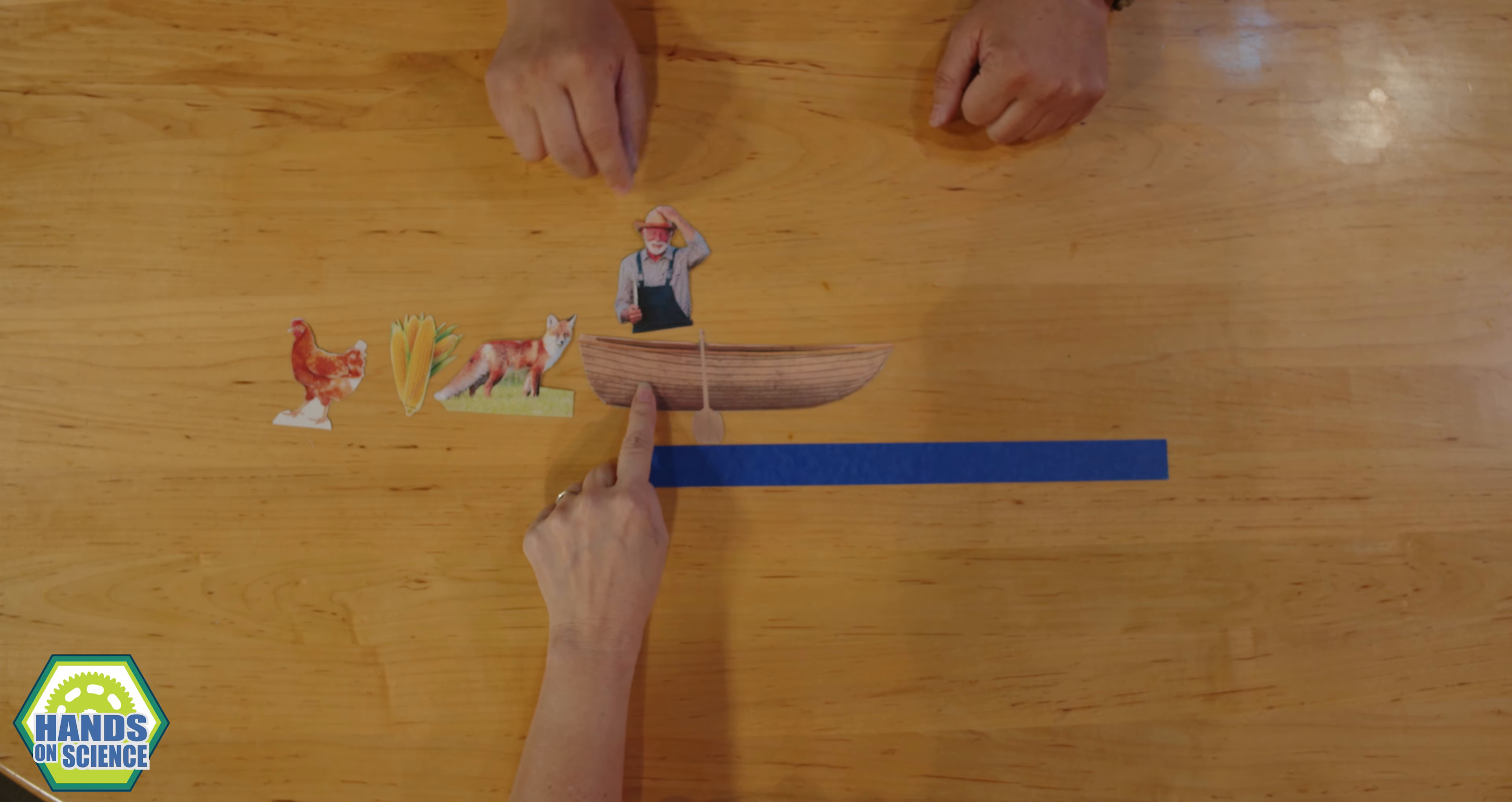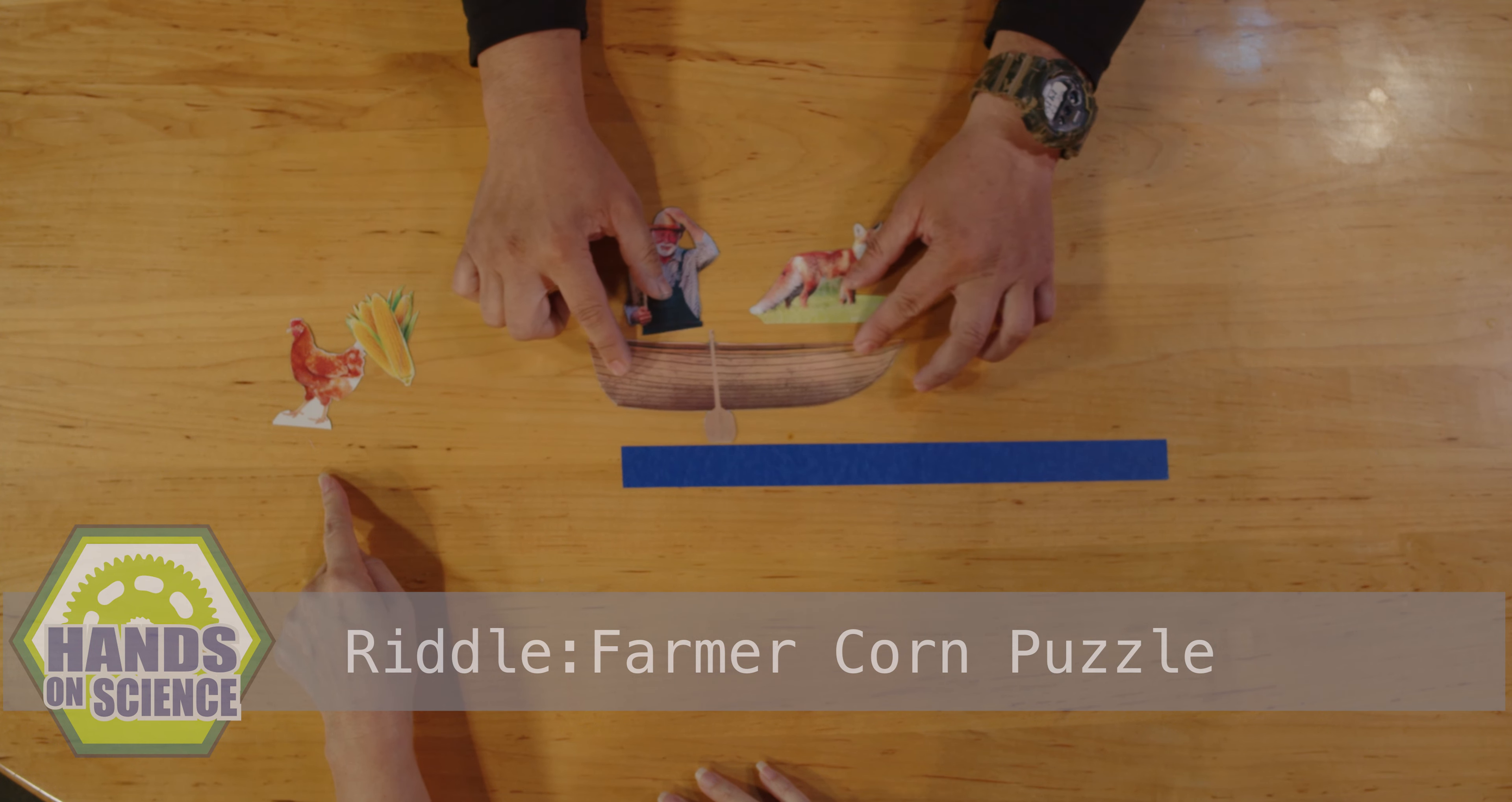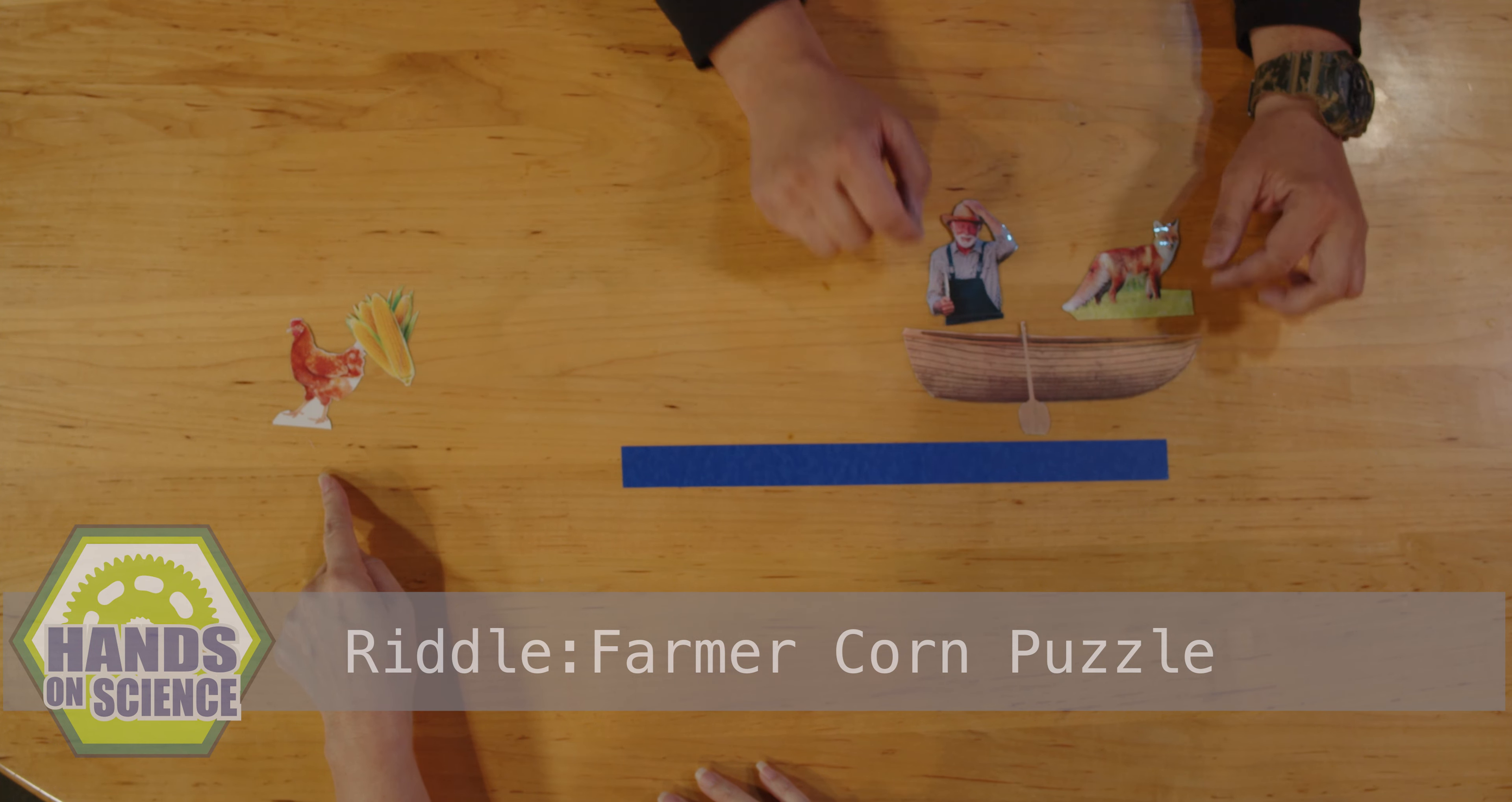And you have a farmer. Farmer. With a boat. Boat. And the farmer has a fox, some corn, and a chicken. But to cross the river, the farmer can only take one thing with him at a time to cross the river.